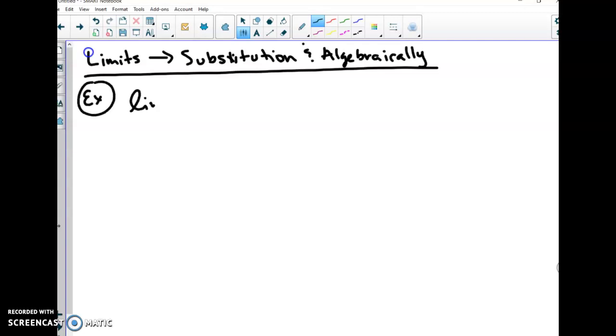For instance, if I have the limit as x is approaching 1 of 4x plus 6, all you have to do is sub in that 1 into your notation. So this is realistically 4 times 1 plus 6 to give me 10. That limit is 10. You're just taking whatever that number is and subbing it into the actual function.